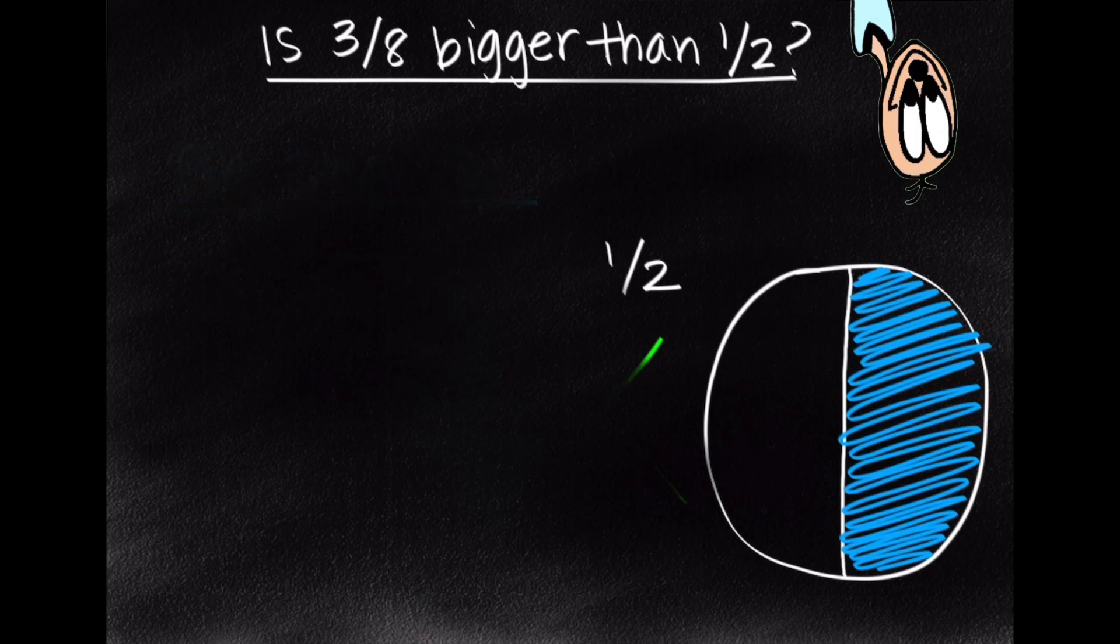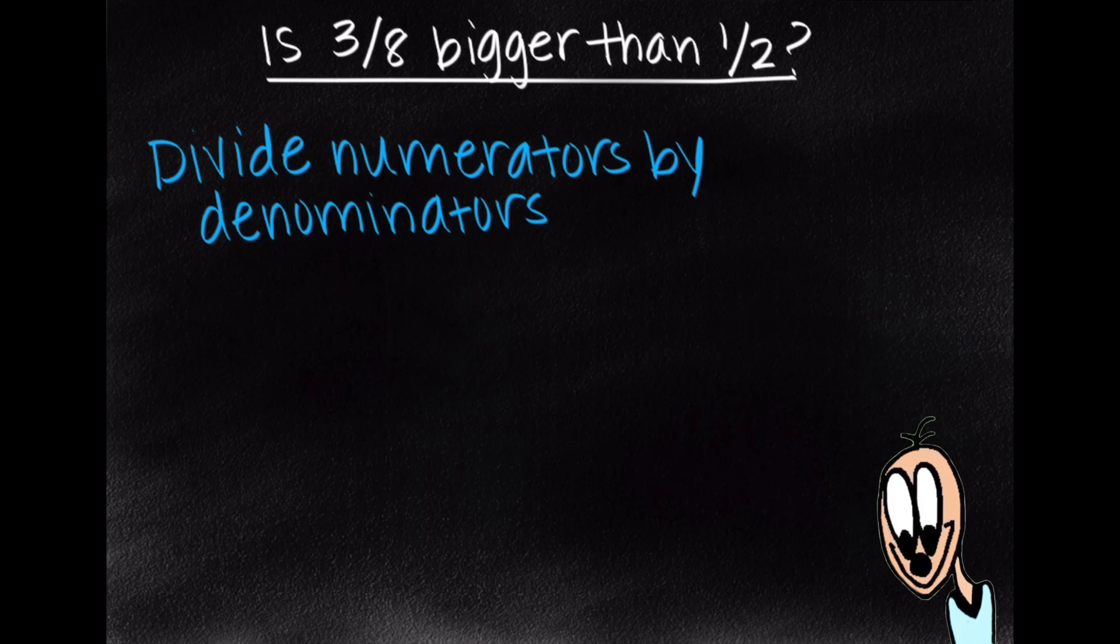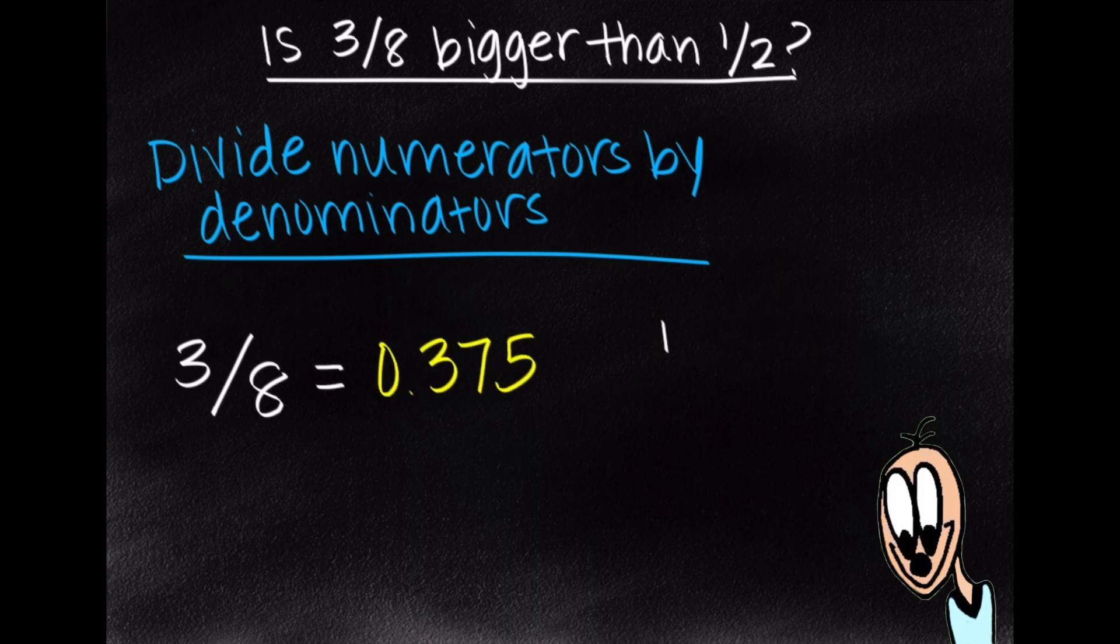And our final method to determine whether 3 eighths is bigger than 1 half is to divide the numerators by the denominators and compare the decimal numbers. So let's just go ahead and do that. We have 3 eighths, 3 divided by 8 gives us 0.375. And then we have 1 half, 1 divided by 2 equals 0.5.